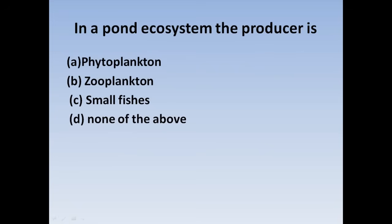Next question: In a pond ecosystem, the producer is — Option A: Phytoplankton, Option B: Zooplankton, Option C: Small fishes, Option D: None of the above. In the pond ecosystem, the producer is Phytoplankton. Correct answer: Option A, Phytoplankton.